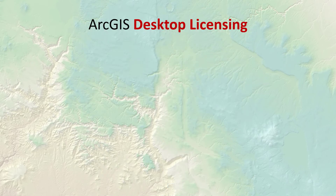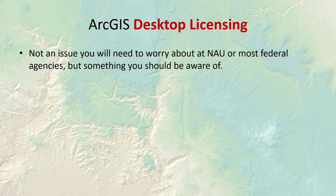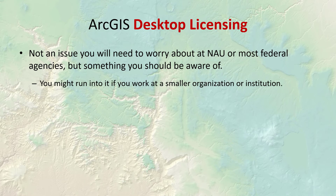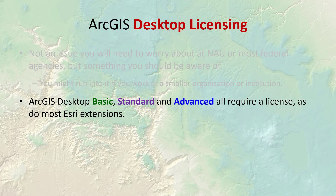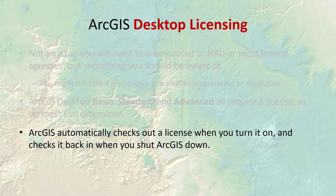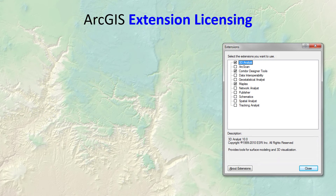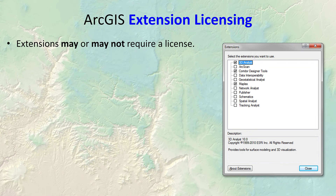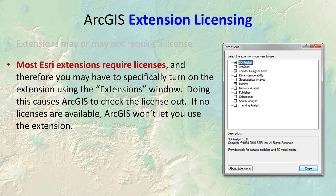Regarding desktop licensing — Basic vs. Standard vs. Advanced — this shouldn't be an issue to worry about in this class, but be aware of it if you use ArcGIS at different institutions or smaller organizations. Larger organizations usually have a certain number of ArcGIS licenses and separate licenses for Basic, Standard, Advanced, and different extensions. They can install the software on every machine, but each machine checks out the license when it starts the software. If an organization only has 10 licenses, only 10 people can use ArcGIS at a time even if a hundred people have it installed. For extensions, if it's an Esri extension it probably requires a license, and turning it on in the extensions window causes ArcGIS to check out the license. If no licenses are available, ArcGIS won't let you turn on the extension.